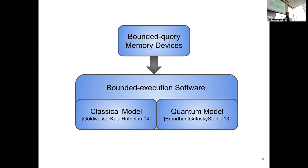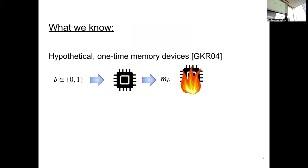We know that these bounded execution software cannot be done using software only. Even in the quantum model, we need these special memory devices in order to build bounded execution quantum programs. This idea was put forward by Goldwasser, Kali, and Rothblum in their work about one-time programs. Basically, they assumed the existence of one-time memory devices and used them to build one and k-time programs using garbled circuits.